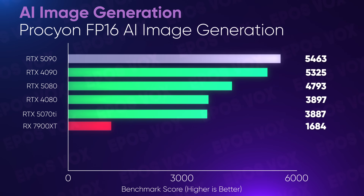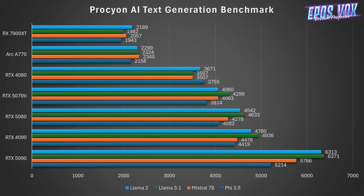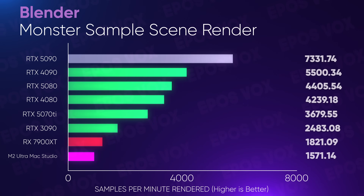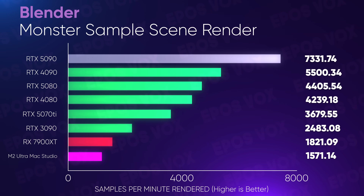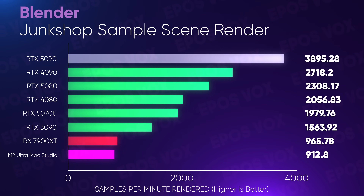For generative AI, we see the 5070 Ti actually fall just a hair behind the RTX 4080 for image generation using the Procyon floating point 16 benchmark, but then passing the 4080 up again in Procyon's AI text generation benchmarks. Blender's 3D rendering benchmarks again see the 5070 Ti fall behind the RTX 4080. This is still a significant leap over even the RTX 3090 from the generation prior, but doesn't quite keep up with the 80 tier card of last generation, so if you plan on doing 3D work, I'd either aim for the higher up 50 series cards or stick with the 4080 range or higher.